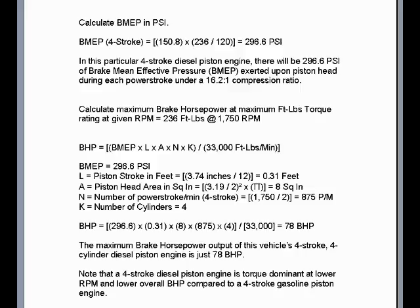We mathematically calculate the brake mean effective pressure in PSI — the pressure exerted on the piston head during each power stroke. 236 divided by 120, times 150.8, translates to almost 300 pounds per square inch. Exactly 296.6 pounds per square inch under a 16.2 to 1 compression ratio, along with the heat of air compression ignition cycle.